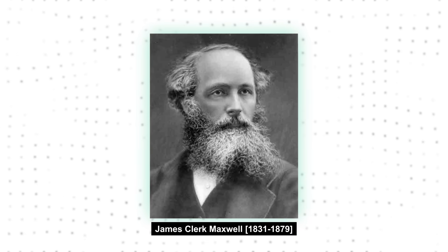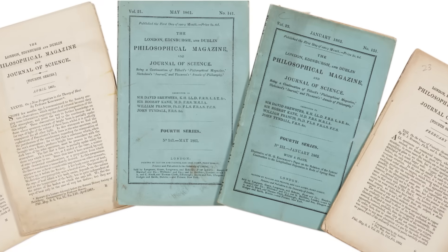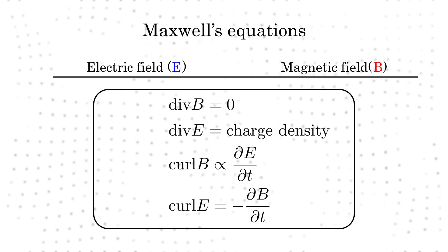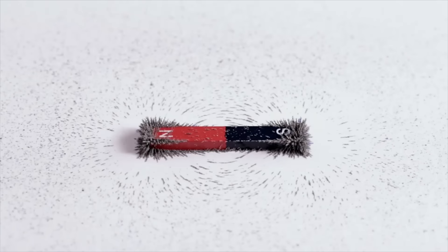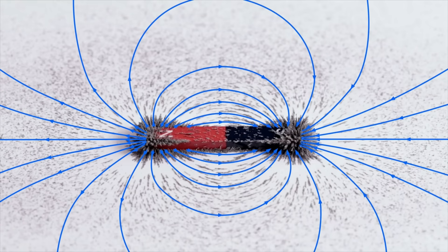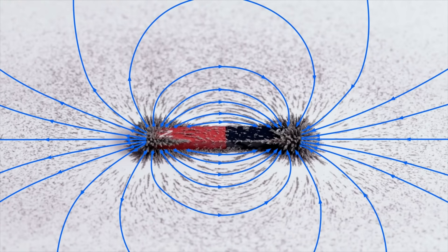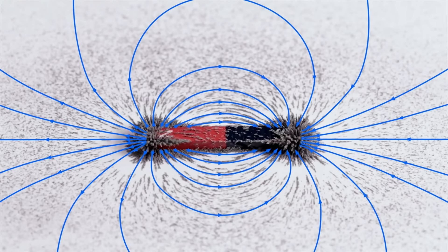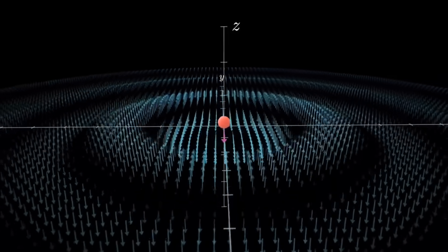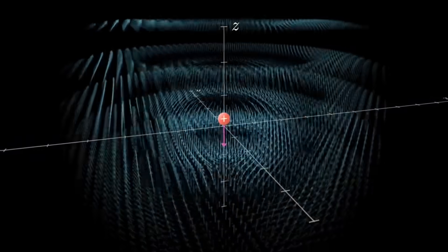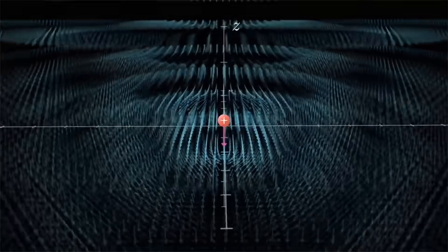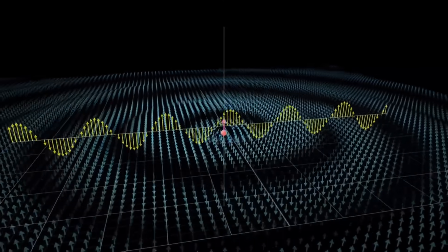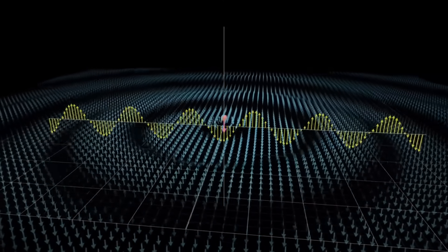It took Maxwell over 10 years and multiple papers to shape those equations in their final forms. The main difficulty was that Faraday's field concept was extremely hard to grasp because fields are intangible by nature. Today we take for granted that concepts like electric and magnetic fields are fundamentals and cannot be reduced to something else, but it was far from obvious for scientists at that time.